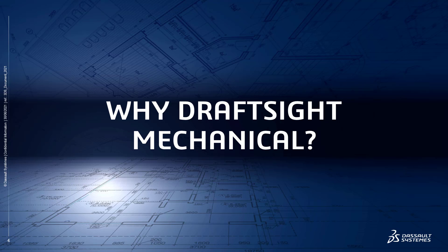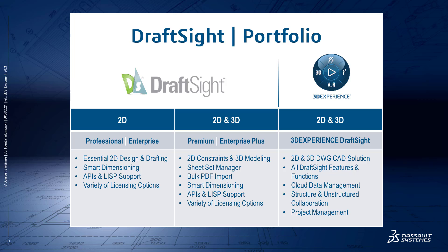Let's jump right in and discuss why DraftSight Mechanical, and more importantly, why now? Before I give you the details, I believe it's important to understand the current DraftSight offerings. DraftSight is not just one product, but an entire portfolio of solutions. We have DraftSight Professional and Enterprise, which is your traditional 2D workhorse, and DraftSight Premium and Enterprise Plus, which gives you 2D constraints and 3D modeling capabilities.